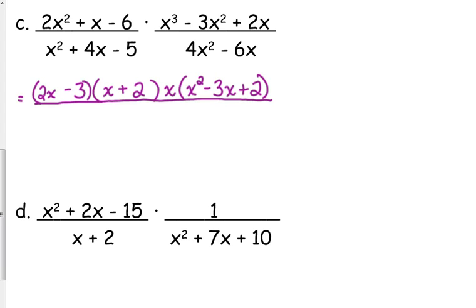First denominator, no GCF. This one's pretty easy: x plus 5 times x minus 1. Second denominator has a GCF of 2x. When we take that out, we're left with 2x minus 3.